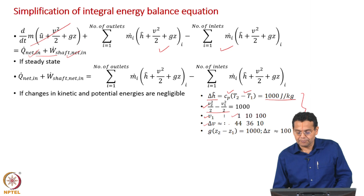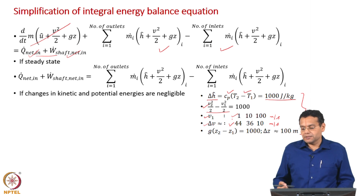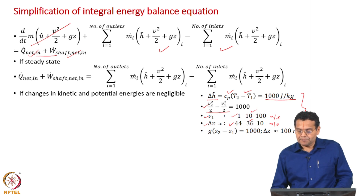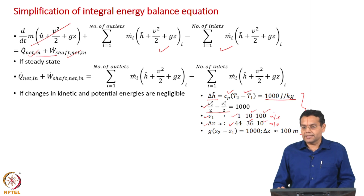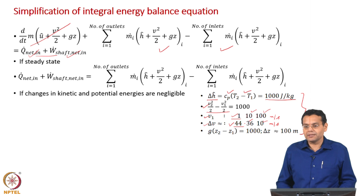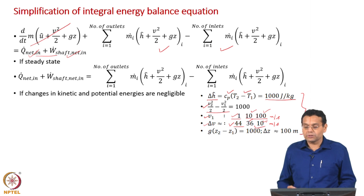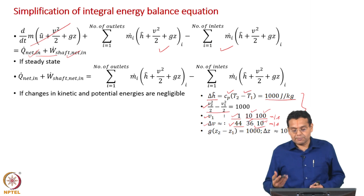For typical process equipment like heat exchangers, distillation columns, or reactors where inlet velocities are on the order of 1 m/s, a velocity change of 44 m/s is needed for KE change to match 1000 J/kg — this hardly happens, so kinetic energy changes are negligible. However, for compressors or steam turbines where velocities are on the order of 100 m/s, velocity changes of about 10 m/s are plausible, so kinetic energy must be considered in those cases.